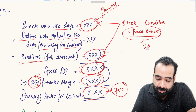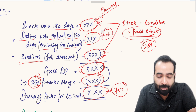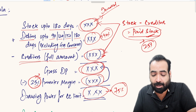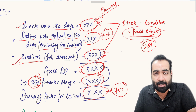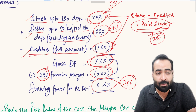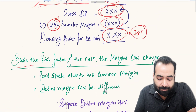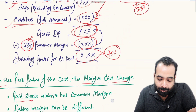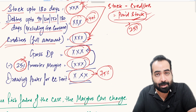I have also seen cases where 25 percent margin is asked on paid stock and 40 percent margin is asked on debtors. The margin on stock and creditors must always be the same since they together represent paid stock — the margin cannot differ between these two items. Only the debtors amount can have a different, higher margin demanded by the bank.